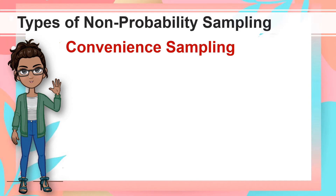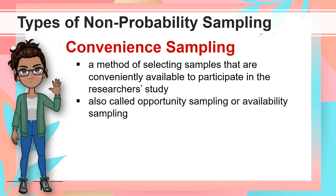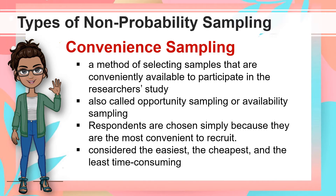First is Convenience Sampling. This is a method of selecting samples that are conveniently available to participate in the researcher's study. This method is also called Opportunity Sampling or Availability Sampling. Respondents are chosen simply because they are the most convenient to recruit. Thus, this technique is considered the easiest, the cheapest, and the least time-consuming.